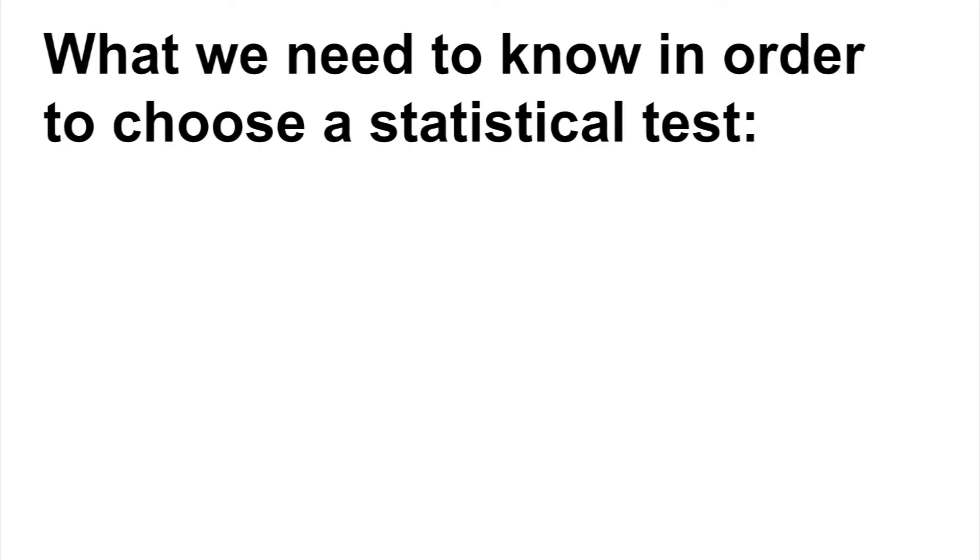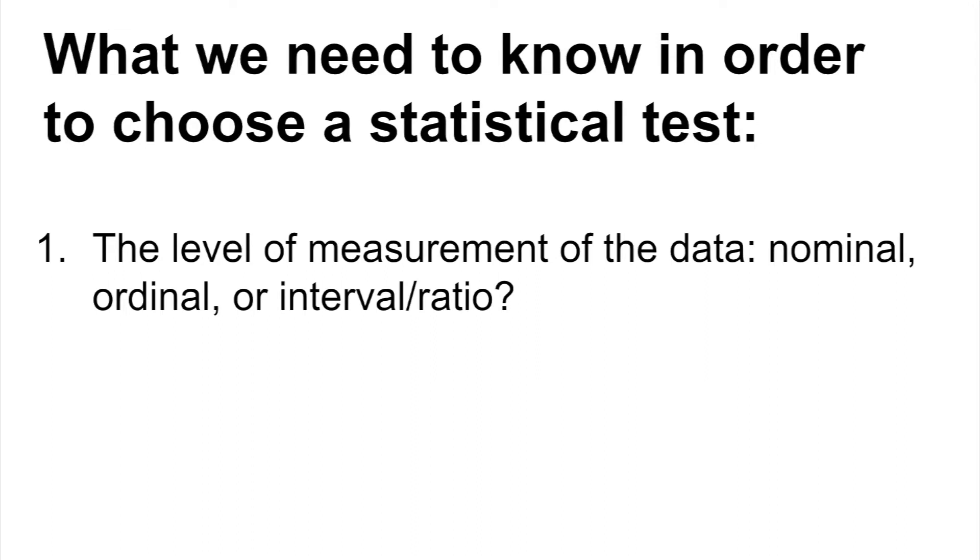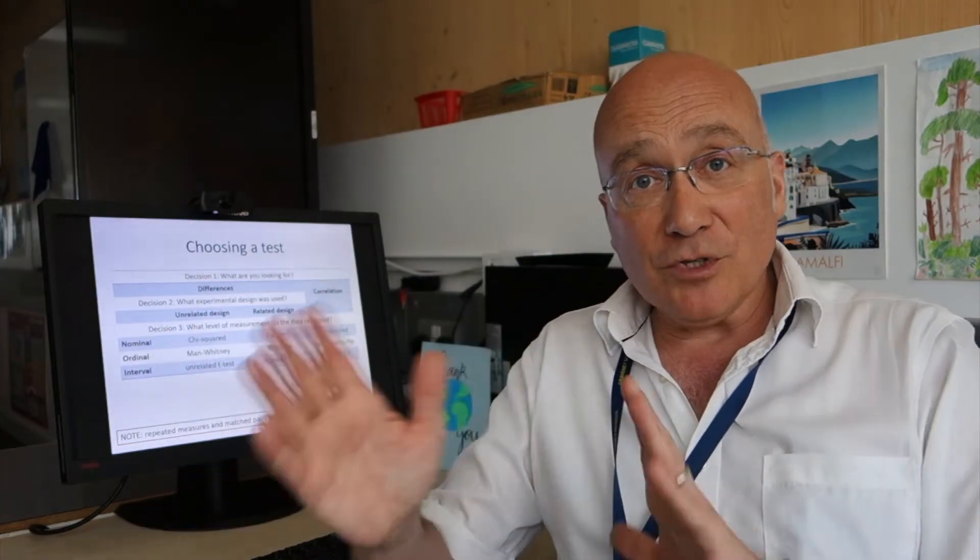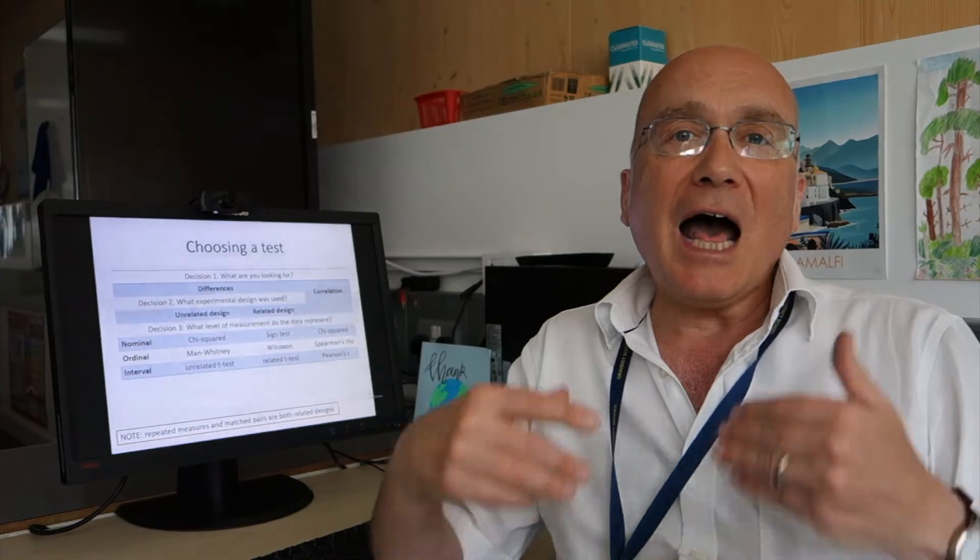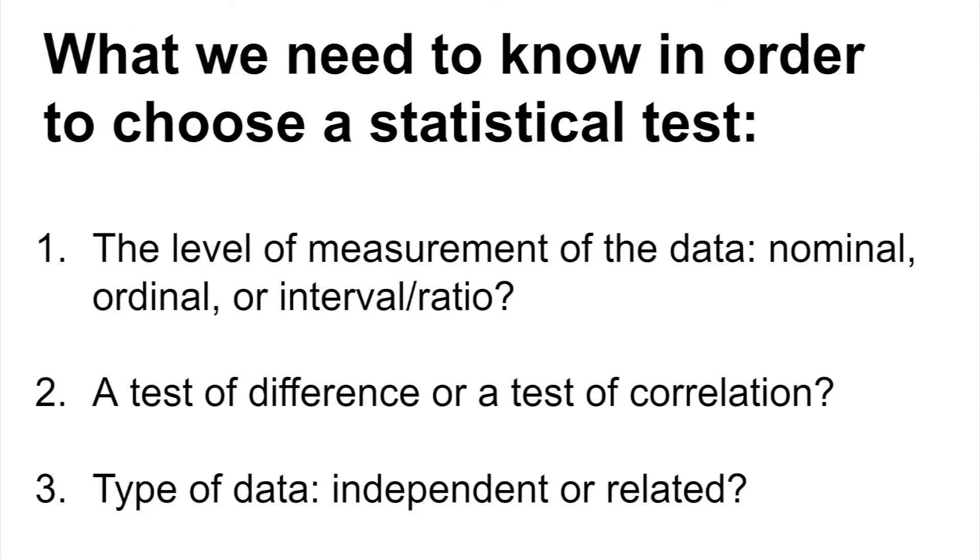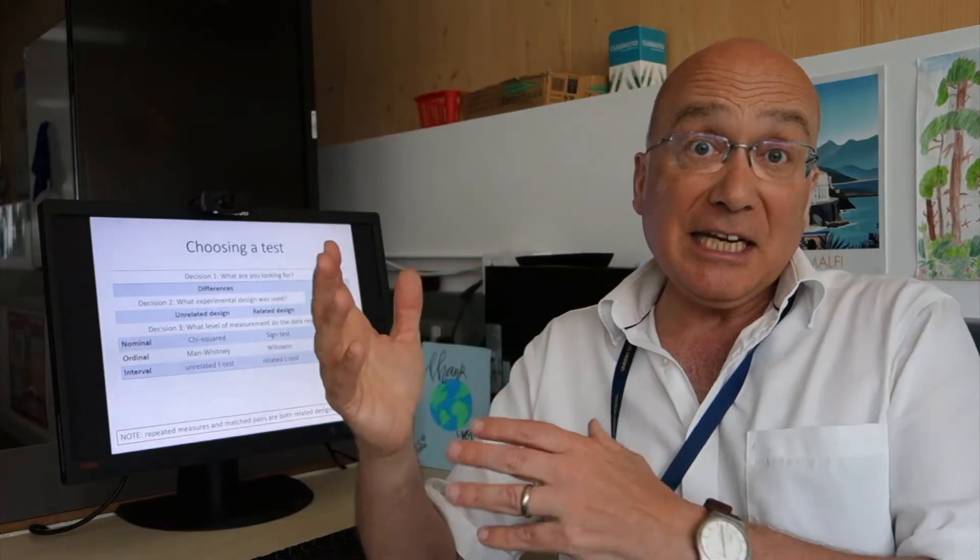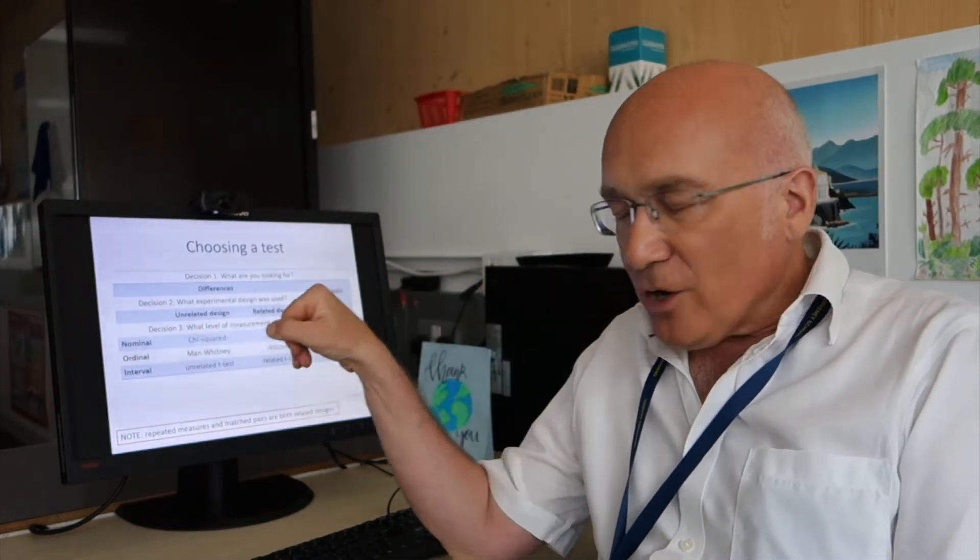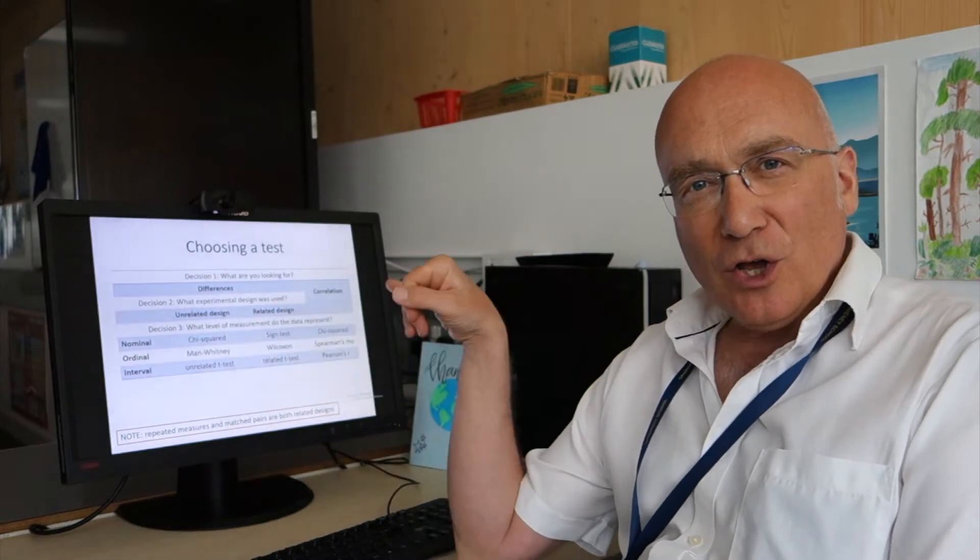All right. So to choose a statistical test, we need to know three things. We need to know the level of measurement of the data. Is it nominal or ordinal or interval stroke ratio data? Secondly, we need to know whether we're looking for a test of difference, if we're trying to find out if two variables are different, or a test of correlation. And thirdly, we need to know the type of data. Is it independent data or is it related data? And when we know those three things, then we can choose a statistical test according to this table.